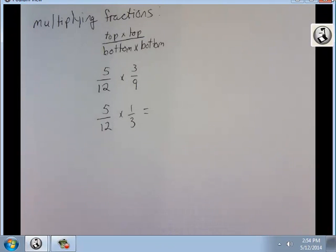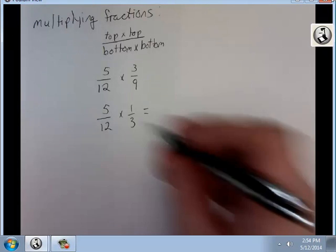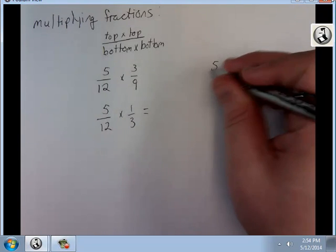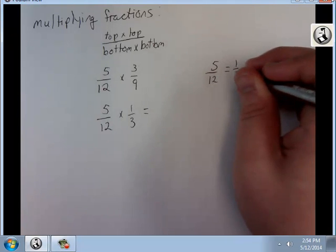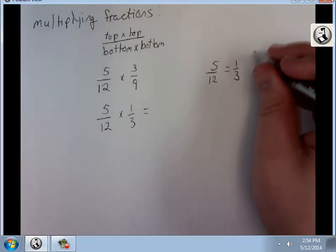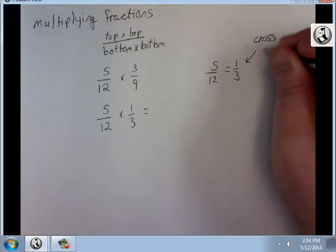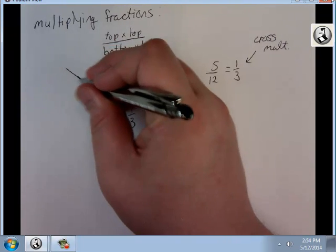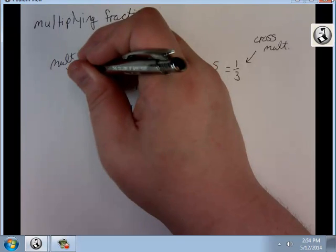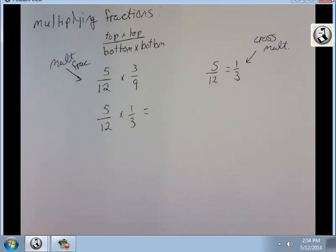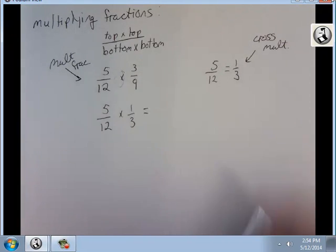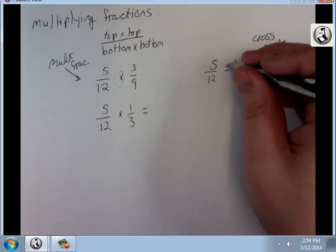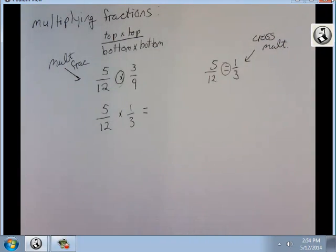And this is where people have trouble with multiplying fractions. This is not the same as this. This is where you would cross-multiply. This is multiplying fractions. They look similar, but the difference is here's my multiplication sign, here's my equal sign. If there is an equal sign, that's where you cross-multiply. We'll talk about that in the next video.